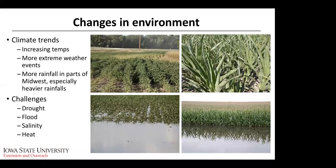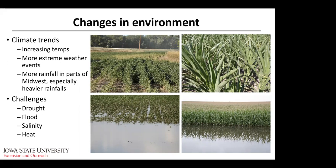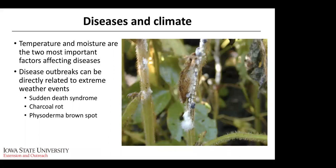Starting with environment, from a plant pathologist's perspective, key changes include increasing temperatures, more extreme weather events, heavier rainfalls, more hail damage, and more rainfall in parts of the Midwest. The challenges include drought and flooding — opposites, but both affecting diseases — as well as salinity and heat. These are abiotic stresses that may be affecting the overall disease profile. The two environmental factors that most drive disease development are temperature and moisture.